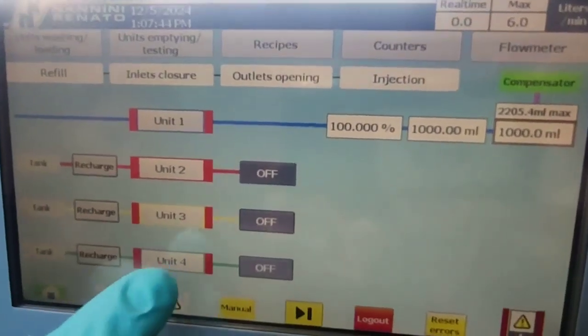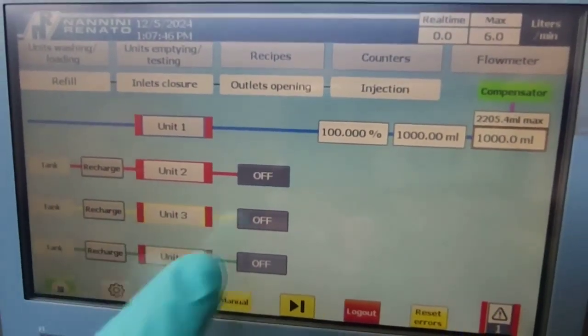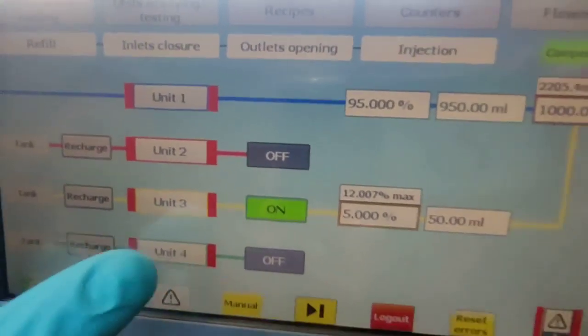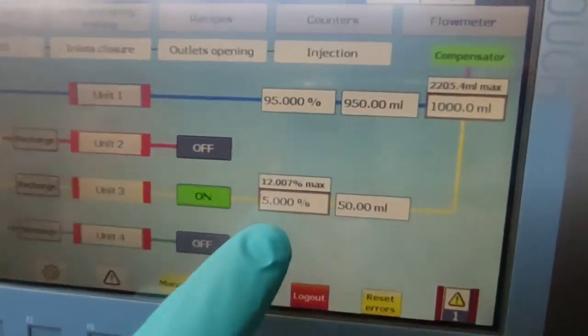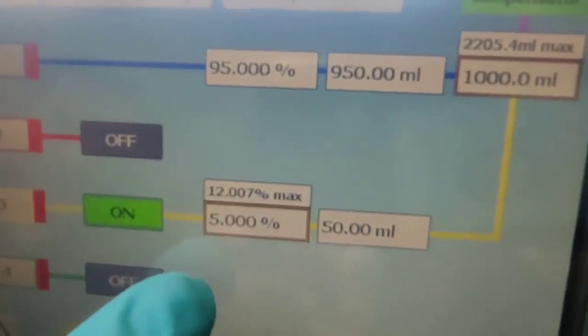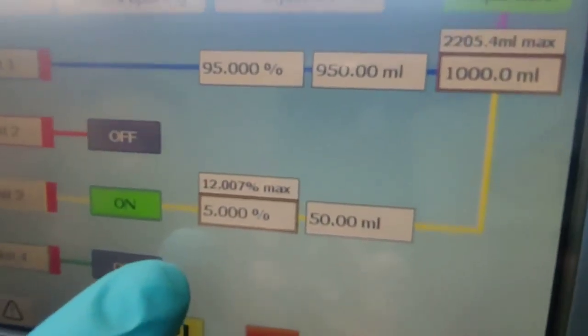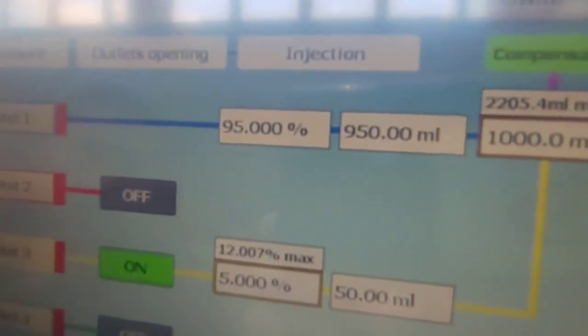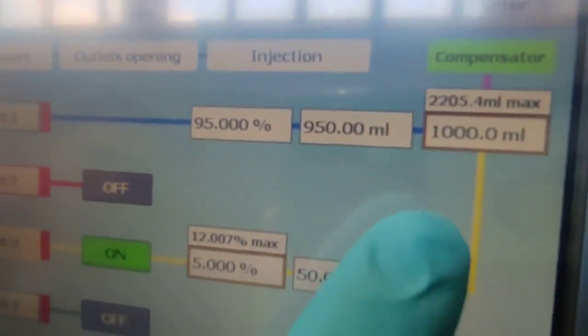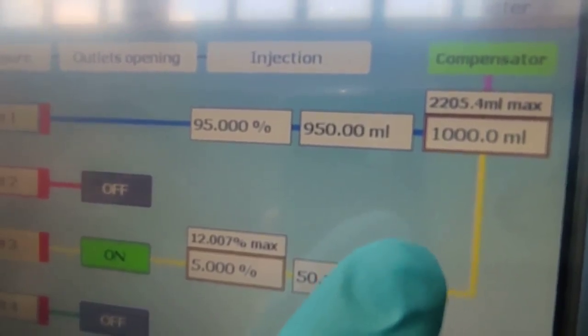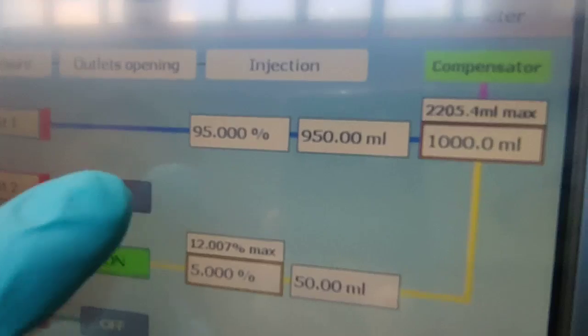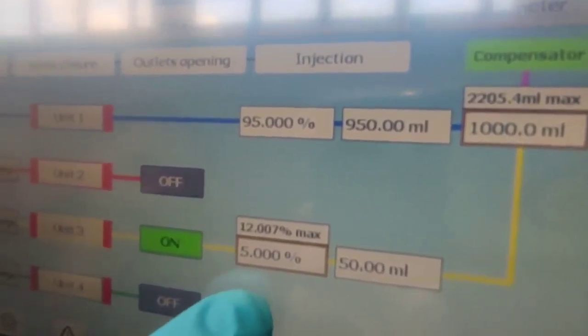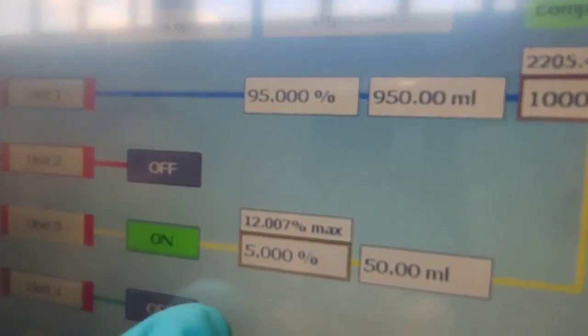In this case we are going to use unit number three, so we push the on-off button here. On the right of the button appears a box where you can set the percentage in relation to the main dosing unit. In this case we are going to dose 1000 ml, one liter.